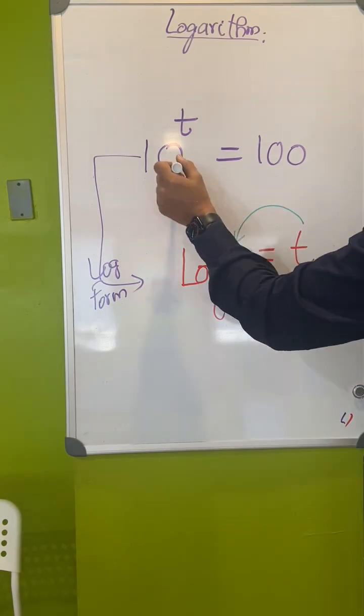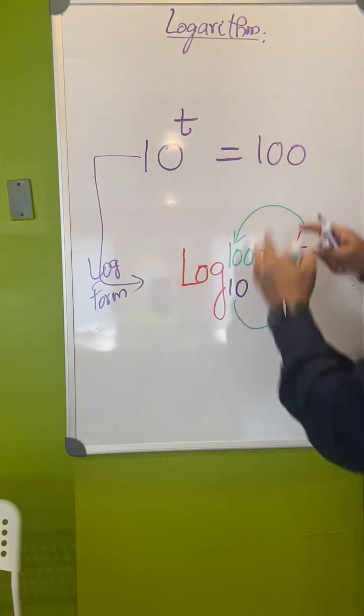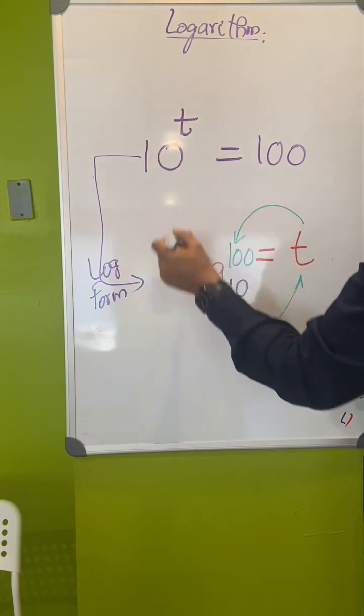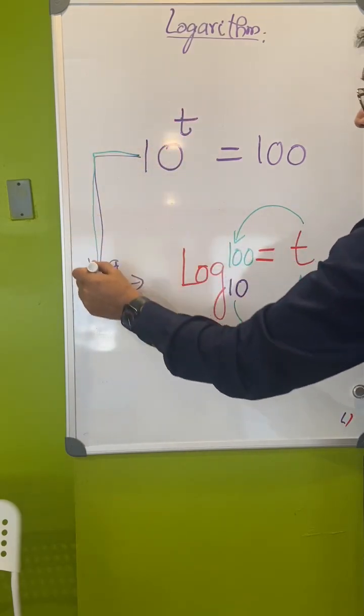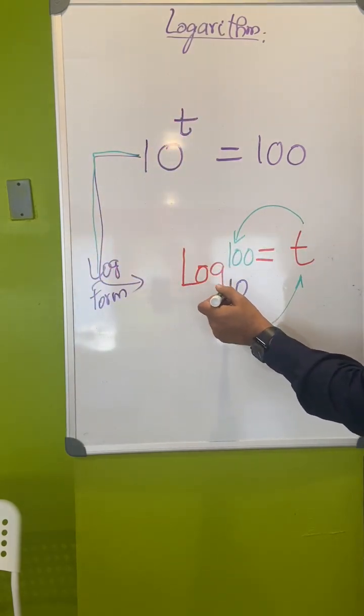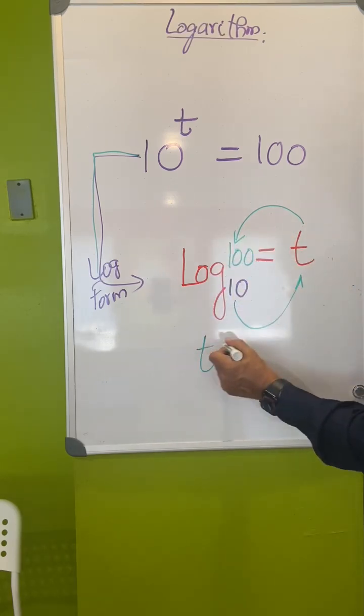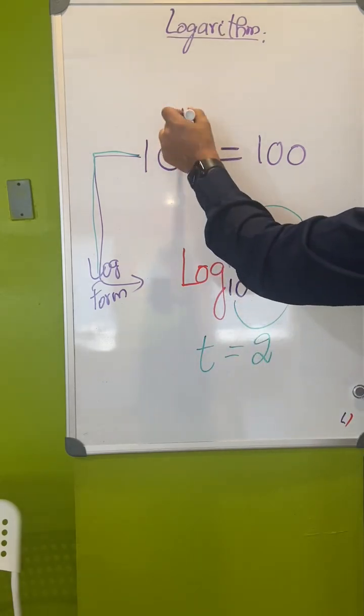10 raised to t equal to 100. So these two things are the same. We don't know what t is here, but by converting this to log, you can find this. Because we know 10 raised to 2 is 100, so t equal to 2.